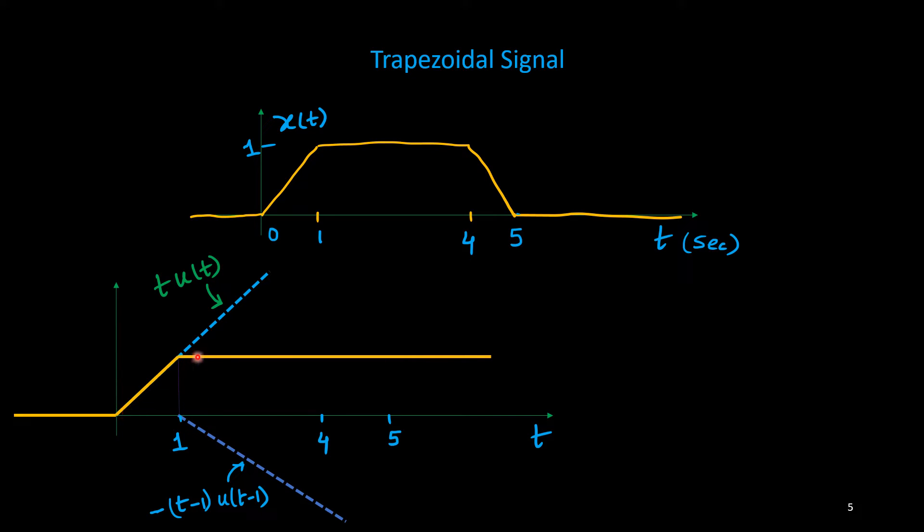So there is a rise here and it will continue up to 1 second and beyond that it will be flat. But it will be flat up to infinity, but here again from 4 seconds there should be one downward slope with slope equal to -1.